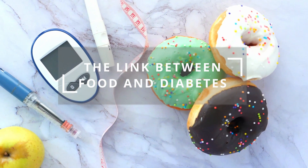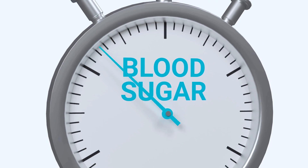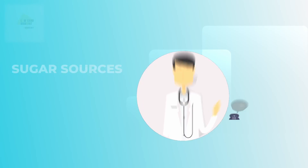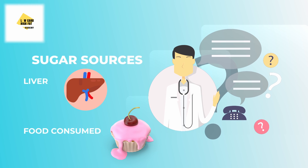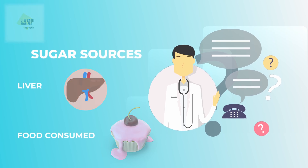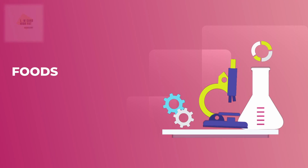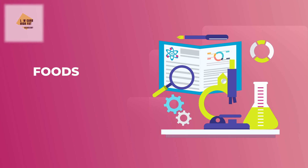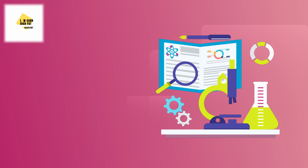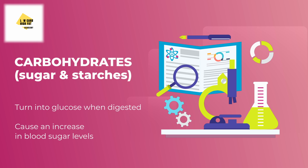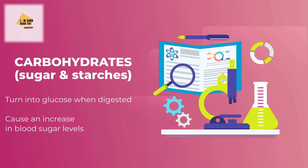The link between food and diabetes. People with diabetes struggle to maintain normal blood sugar levels. The source of sugar in the blood is both the liver and the food consumed. While we cannot control the amount of sugar produced by the liver, we can control the type and amount of food consumed. Foods can be classified into three main groups: carbohydrates, proteins, and fats. Carbohydrates, which can come from sugars or starches, turn into glucose when digested and cause an increase in blood sugar levels.